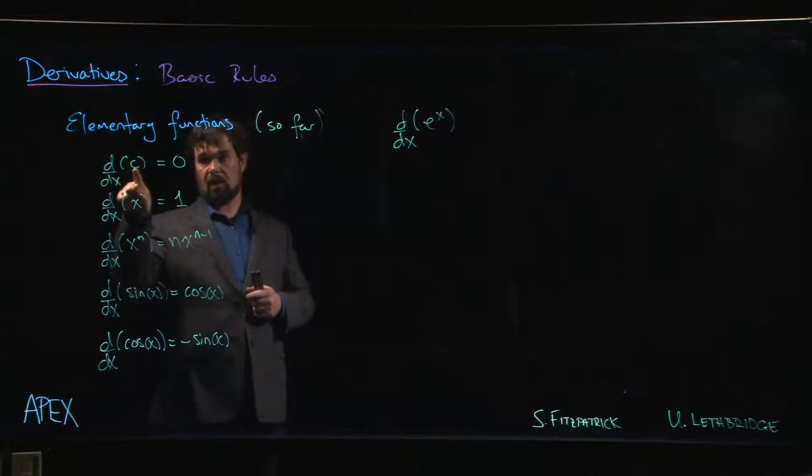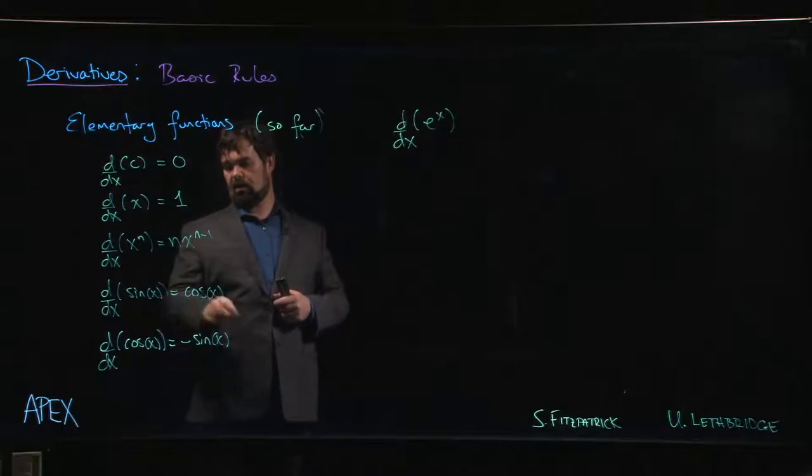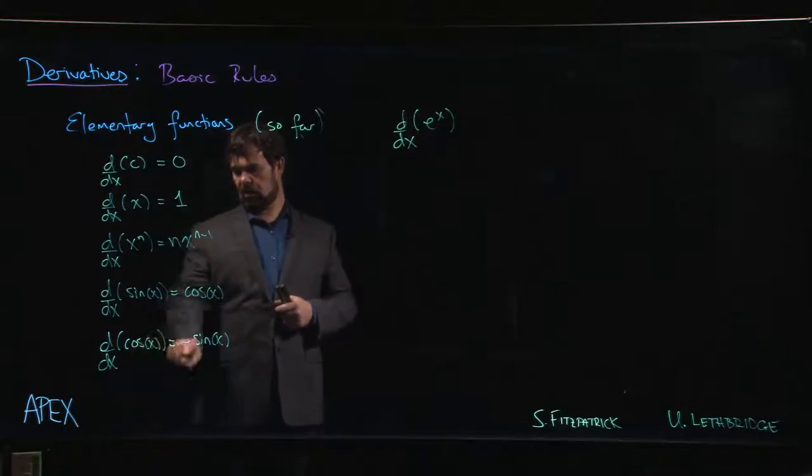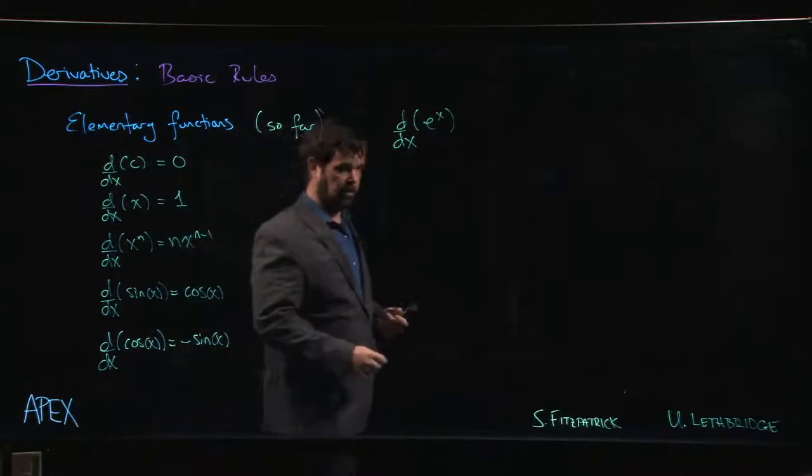We'll talk about how to deal with constant multiples soon. We also saw that the derivative of sine is cosine. The derivative of cosine is negative sine. We did those straight from the definition.